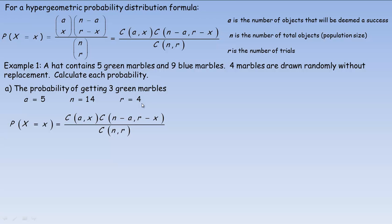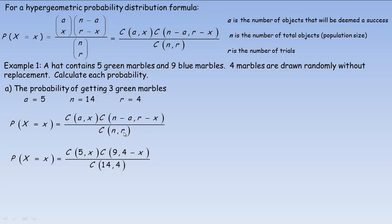Substituting five, fourteen, and four in place of A, N, and R, the formula becomes: five choose x, times nine choose (four minus x), divided by fourteen choose four. Here, N minus A is fourteen minus five equals nine, and R is four, so the denominator is fourteen choose four. It's useful to write out this probability function when calculating more than one probability, since we'll need it again for part B.